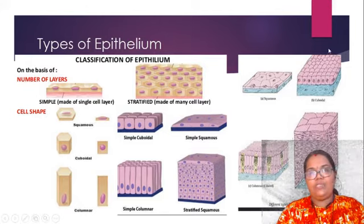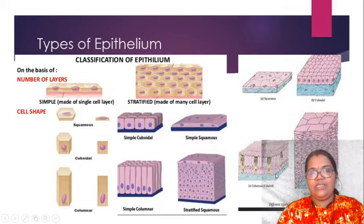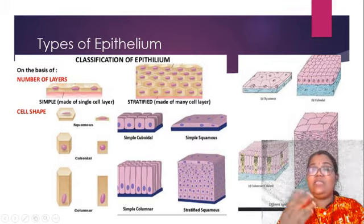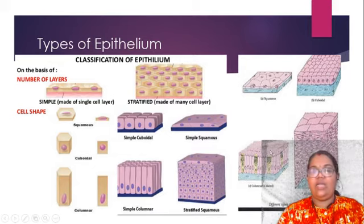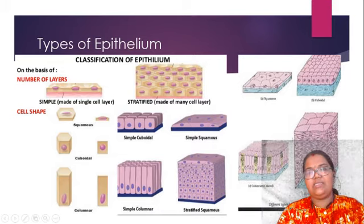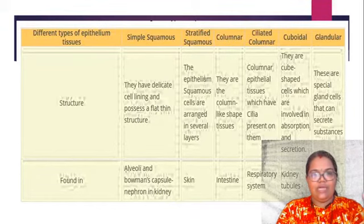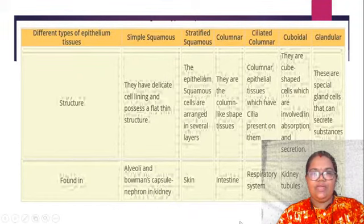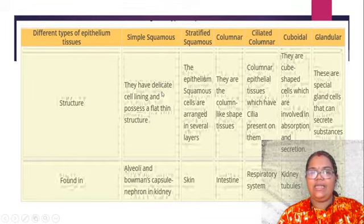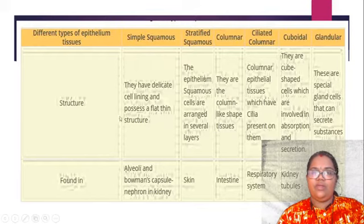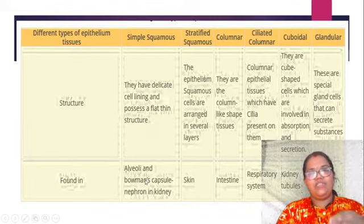Here you can also see cuboidal — cube-shaped epithelial cells — with a basement membrane. And this is columnar, which is the pillar-shaped cells. If this columnar layer has cilia, it becomes ciliated columnar. If it has glands, it is glandular. And if the squamous has many layers, it is stratified squamous, just like in our skin. This is the overview table so that you can understand all these types of epithelium and their structures.